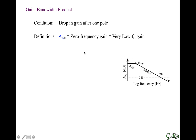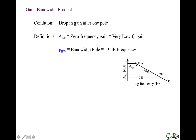A couple of definitions. First, the zero frequency gain — when we put zero in the variable, we're referring to what we call the zero frequency gain. Frequency cannot literally be zero, but we mean very low frequency gain, referring to the very low frequency region on this graph. The other definition is the bandwidth pole, which is the location of the pole. At that location we have negative 3 dB of drop; above it the gain drops at negative 20 dB per decade, and below it the gain is pretty much constant.